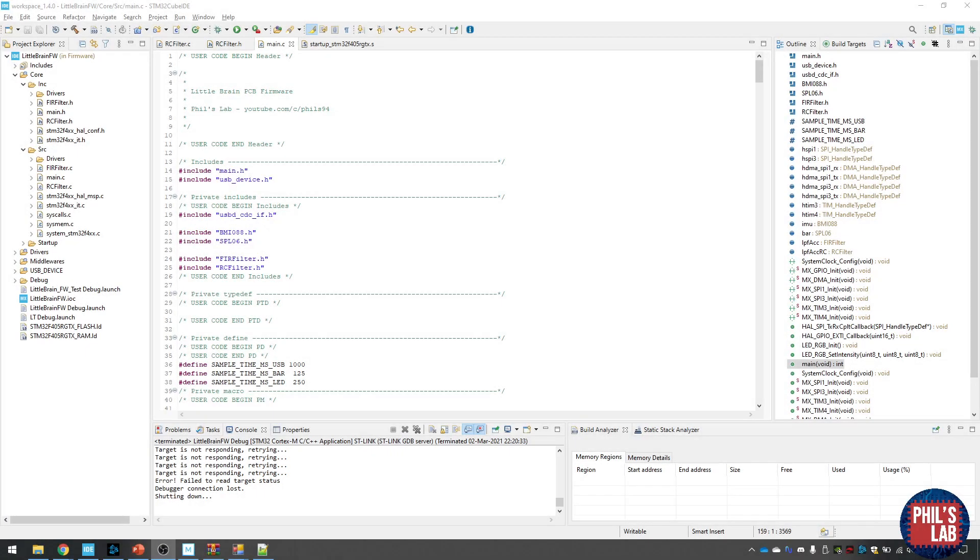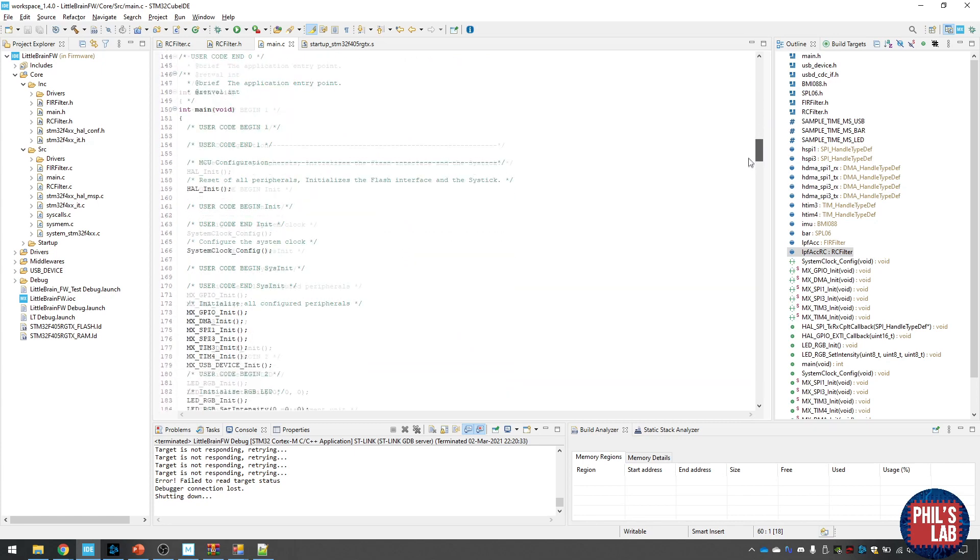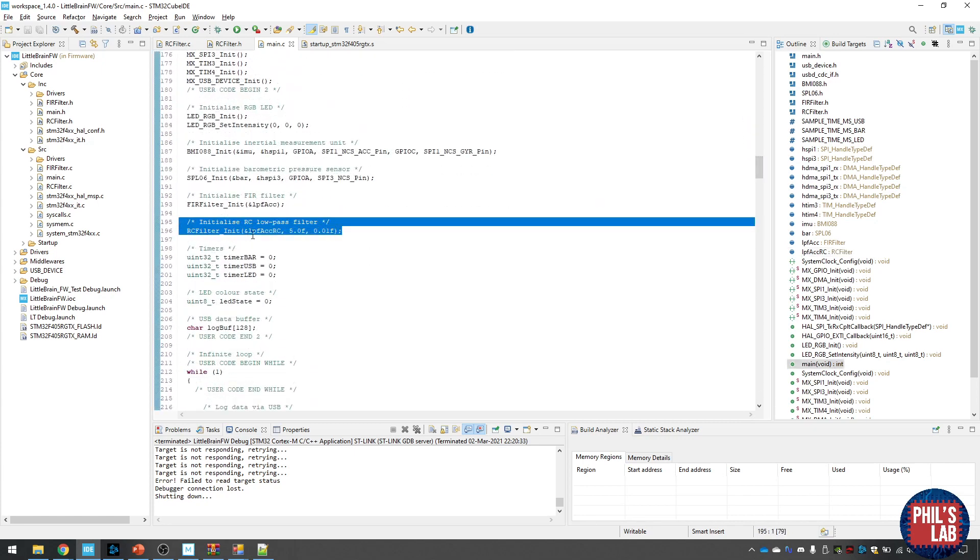So now that we have all of our filtering functions written, it's time to return back to the main.c source code file and add everything in to make sure we can actually filter our accelerometer data. The first thing, of course, is to include our header file, rcfilter. Then we have to create our rcfilter struct. Then at the beginning of our main function, we actually have to initialize the low pass filter. So I'm passing the struct by reference. Then I'm saying a cutoff frequency of 5 hertz in this case, fairly arbitrarily, but of course below the Nyquist limit. And I'm actually sampling the accelerometer data at 100 hertz, which means our sample time is actually 10 milliseconds or 0.01 seconds. And I'm passing that to the initialization function, which will then pre-compute all the filter coefficients for me.